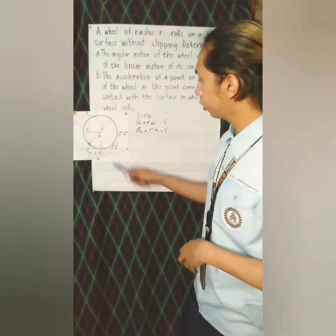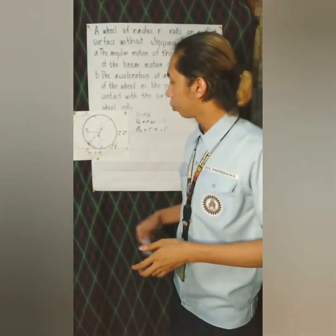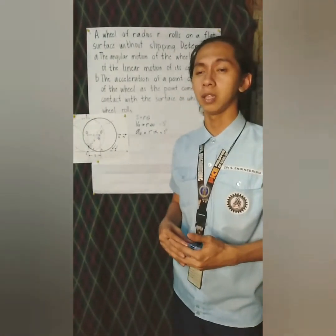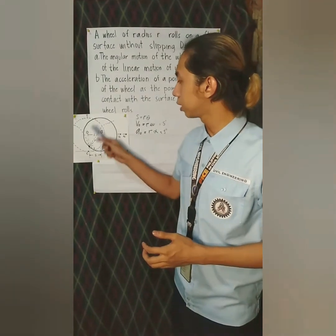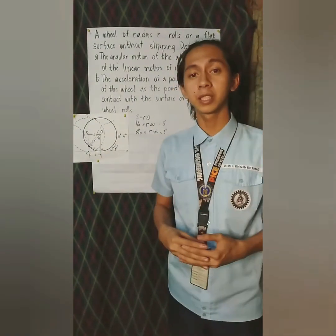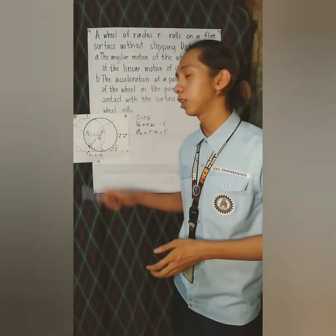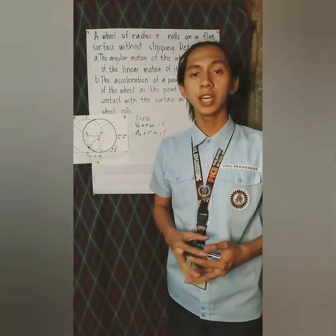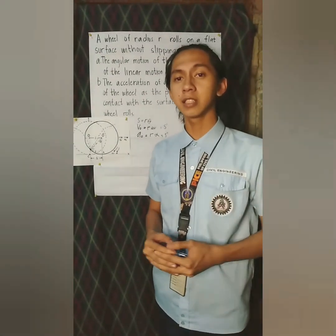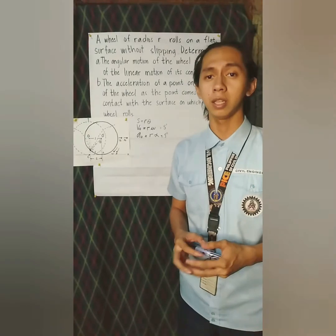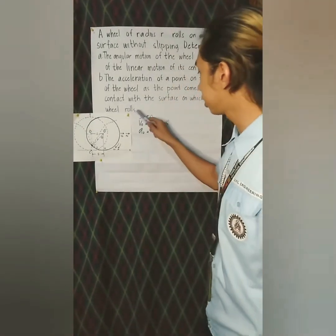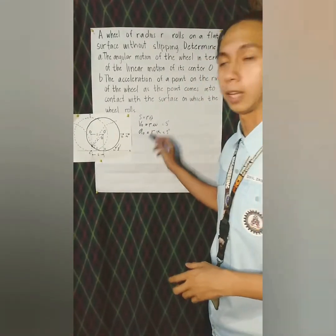The acceleration a_O will be directed in the sense opposite to the initial velocity if the wheel slows down — in other terms, deceleration. In this event, the angular acceleration alpha will have a sense opposite to the angular velocity omega. Therefore, this is the answer for letter A.